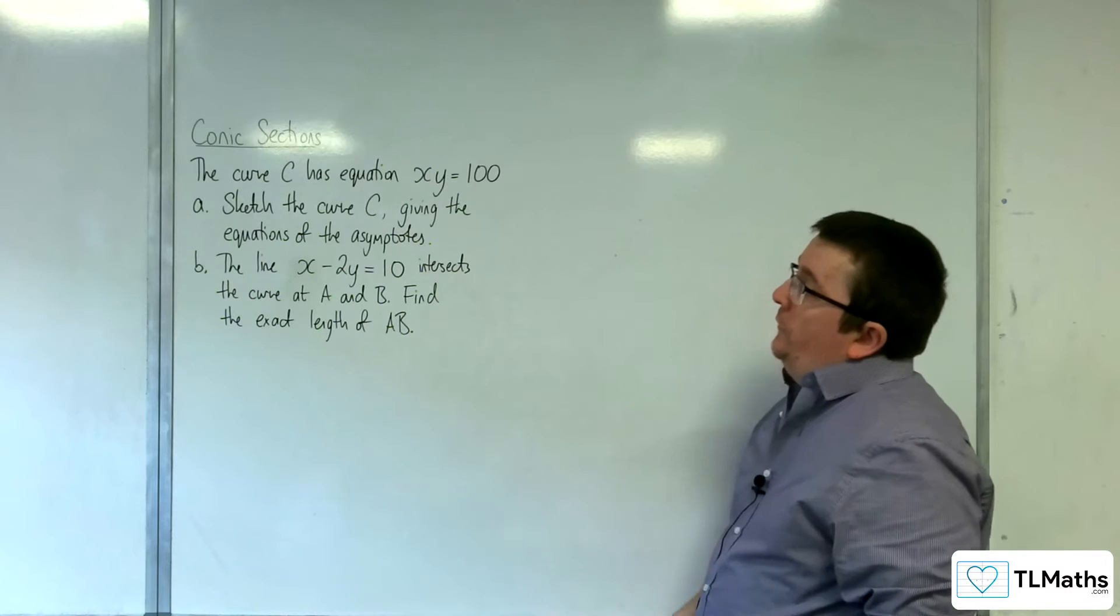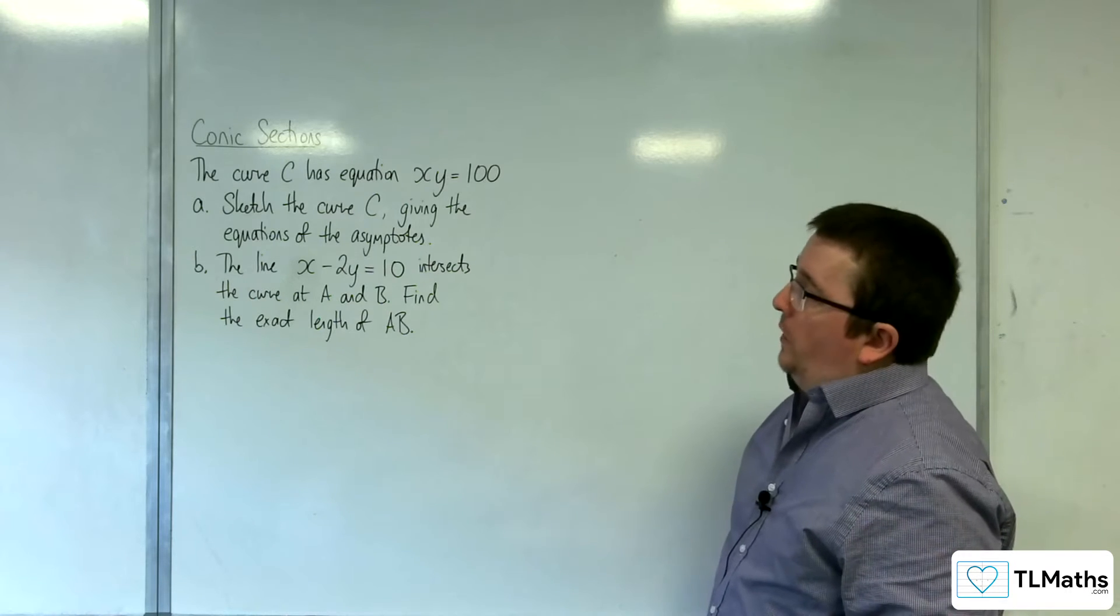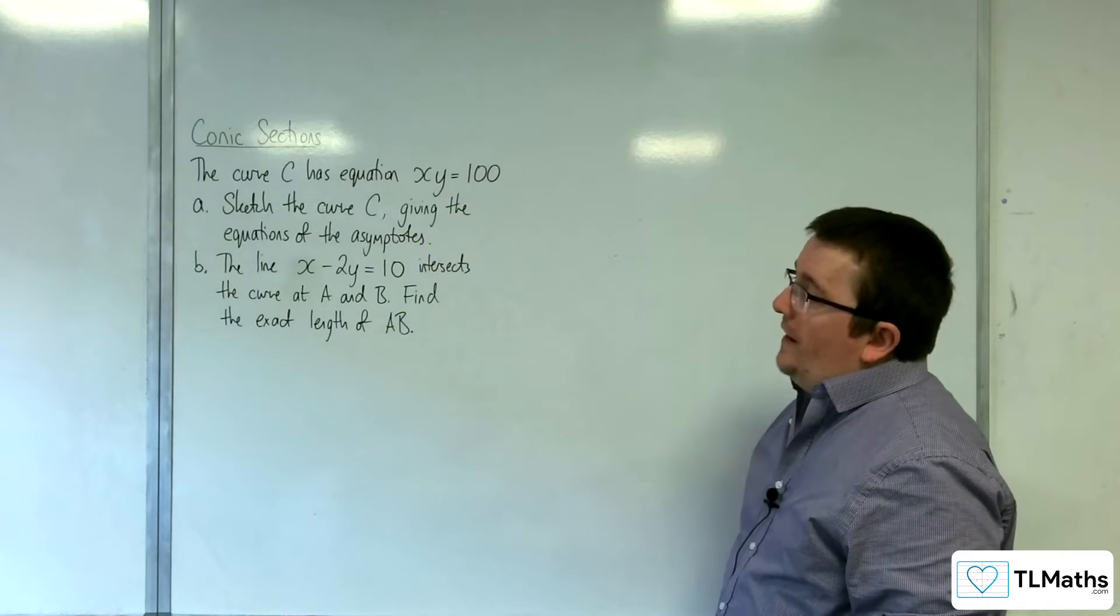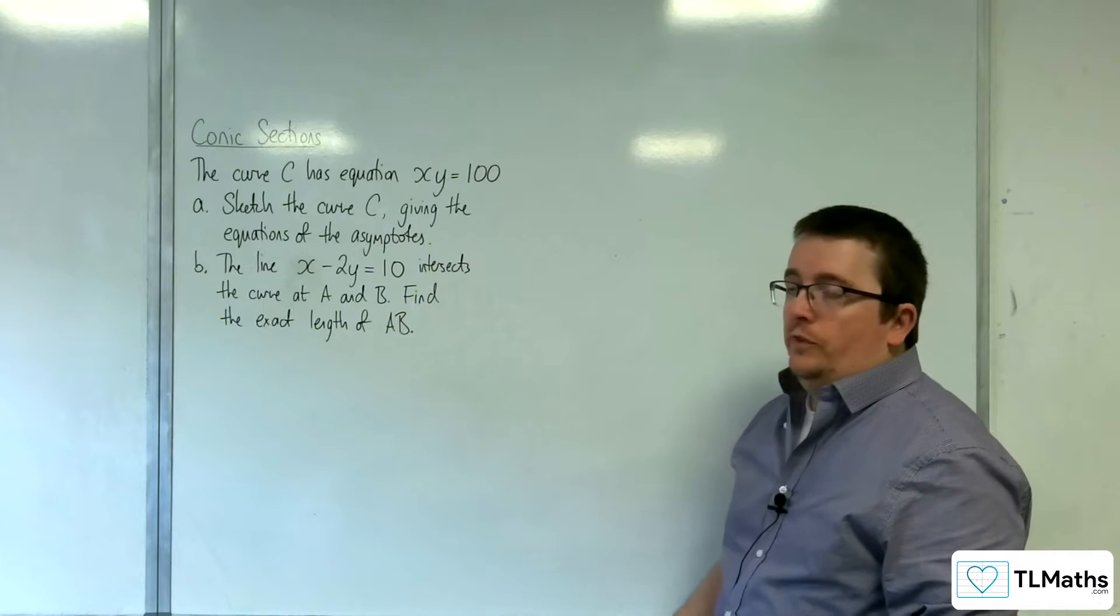In this video, we've got the curve C has equation xy equals 100. Part A: sketch the curve C, giving the equations of the asymptotes.